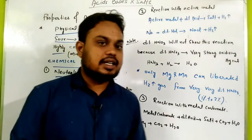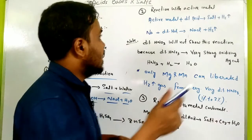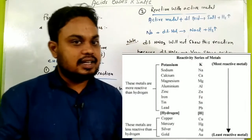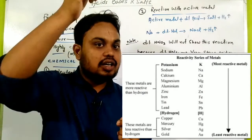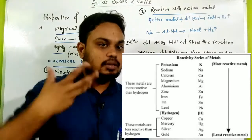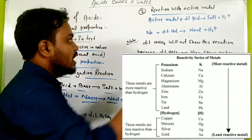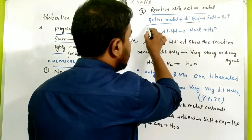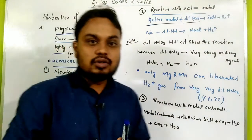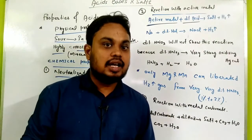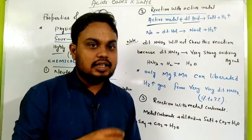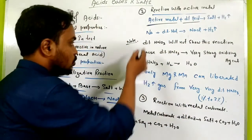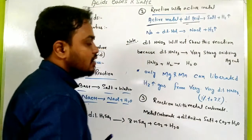The second chemical property is reaction with active metal. Active metals — as discussed in the reactivity series — the higher the element in the series, the more powerful it is. When active metal reacts with dilute acid, remember: dilute is important here. Many concentrated acids do not follow acidic properties, so writing dilute is important.